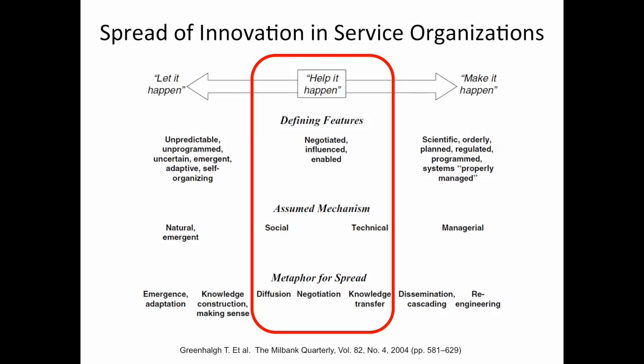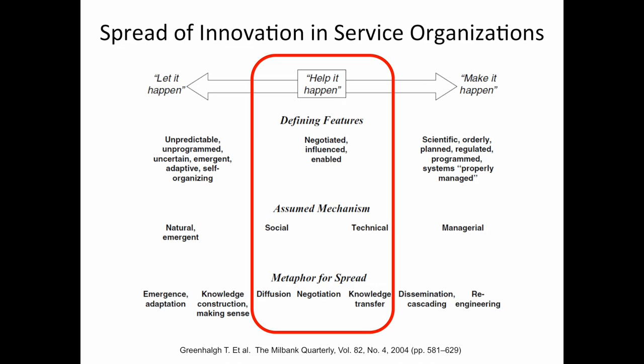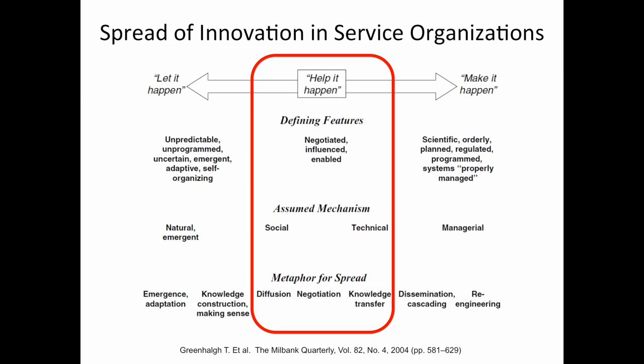I'm going to tell you a few examples of how these apply in the work happening here in BC around system transformation. Another framework I really like comes from Trish Greenhall's detailed meta-narrative about spread of innovation in service organizations. There's a range of ways we can go: we can let it happen, or make it happen — which tends to happen in a top-down hierarchical system. But what we really need to do is think about how we help it happen. She identified parameters that support 'help it happen': its mechanism is social and technical, we are negotiating, influencing, and enabling people to do complex decision-making. Diffusion, negotiation, and knowledge transfer are the mechanisms by which we actually spread innovations in service organizations.